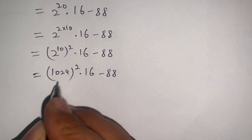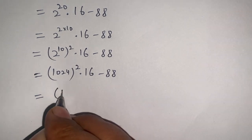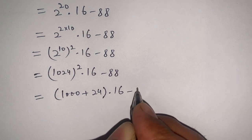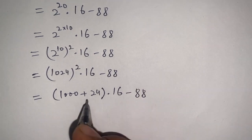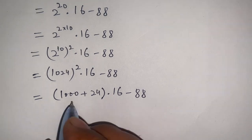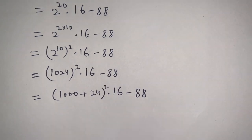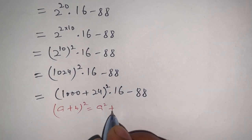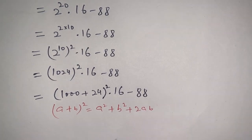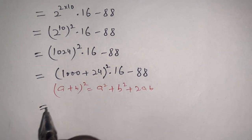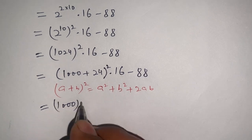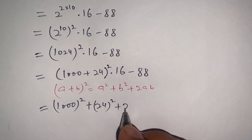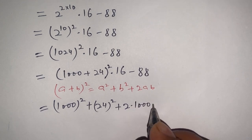We can write 1024 as 1000 plus 24, so it becomes (1000 plus 24)^2 times 16 minus 88. Using the identity A plus B whole square equals A square plus 2AB plus B square, we expand: 1000 square plus 24 square plus 2 times 1000 times 24, all times 16 minus 88.